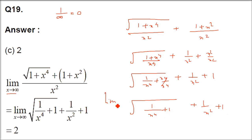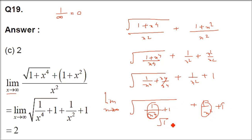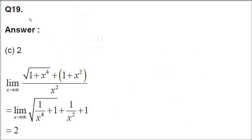Now apply the limit. x tends to infinity, so 1 by x to infinity is going to be 0, and this is also going to be 0. So under root (0 plus 1) plus (0 plus 1), which is under root 1 plus 1 equals 2. So 2 is the answer here.